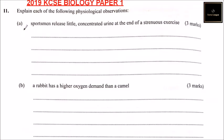We have question number 11. Explain each of the following physiological observations. A sportsman releases concentrated urine at the end of strenuous exercise — and you get three marks for this.